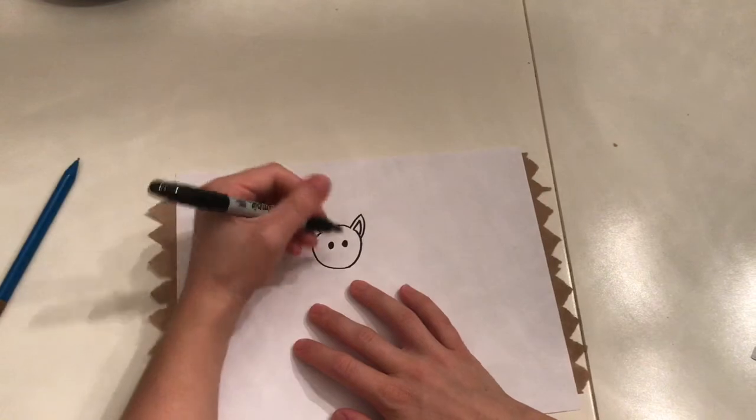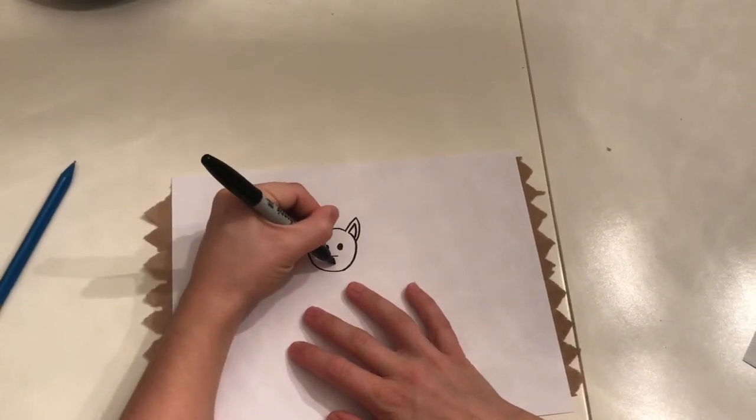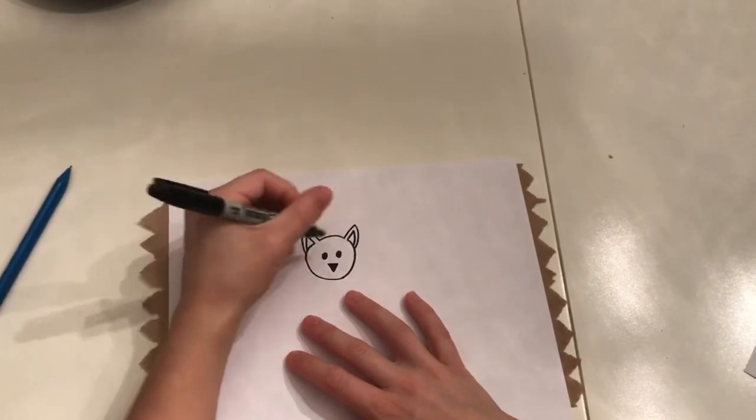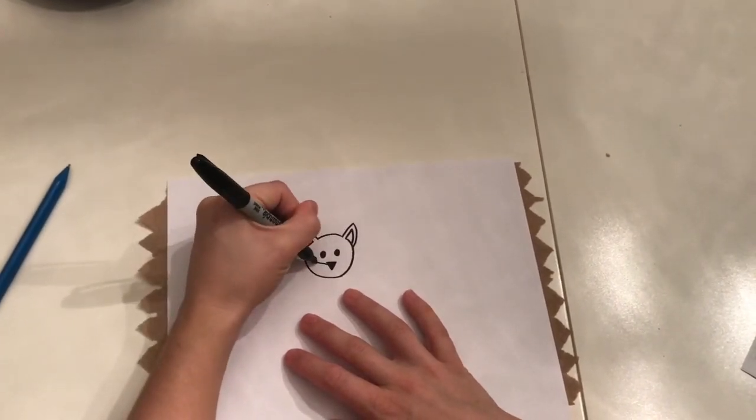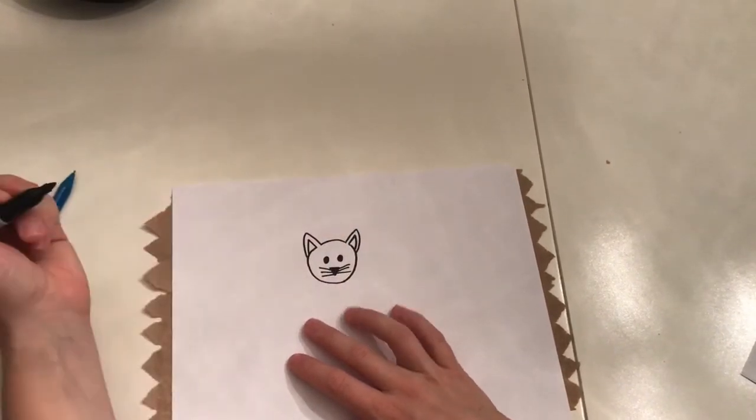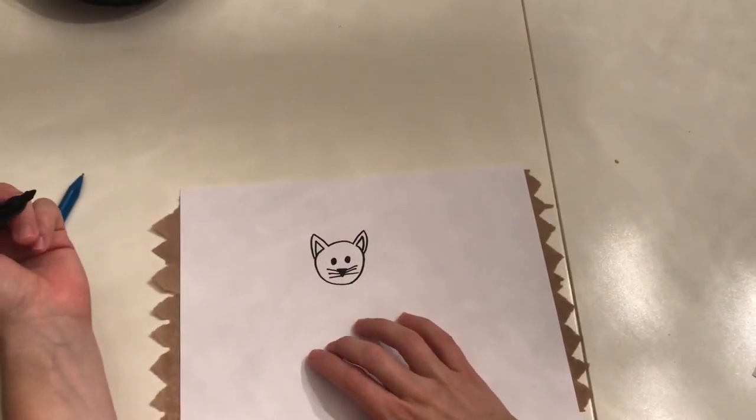The nose is going to be just a little upside down triangle. You can color that in too. And then we want some whiskers. I'm going to do three whiskers. One, two, three. One, two, three. There's our three whiskers.